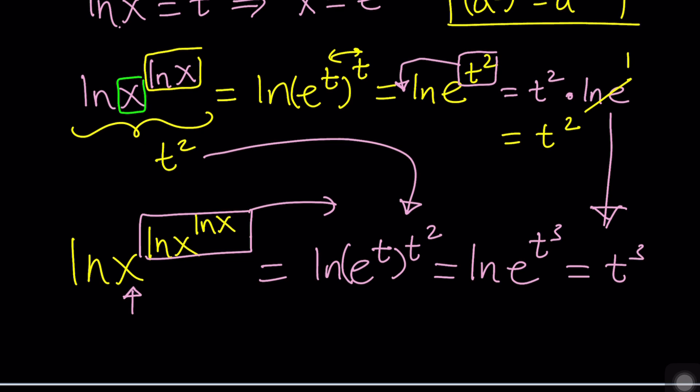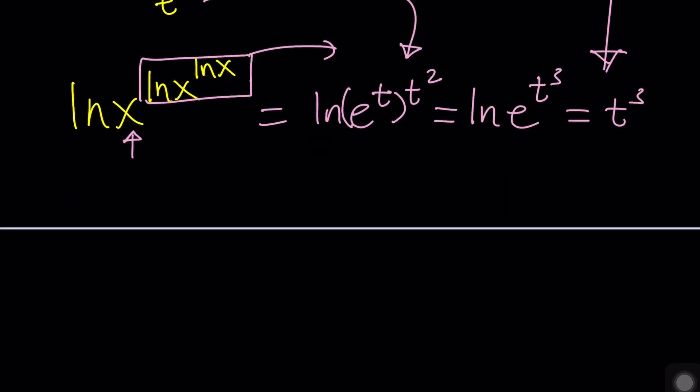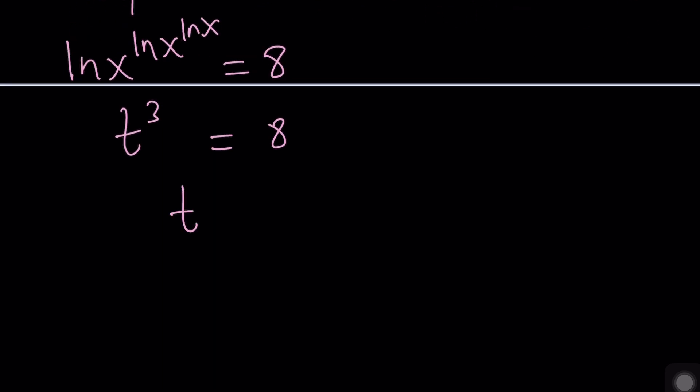So, we got a very simple answer. Nice. What was the original problem? Did you forget? Hopefully not. We had ln(x) to the power ln(x) to the power ln(x) equals 8. Now, we know that ln(x) to the ln(x) to the ln(x) is equal to t cubed, which is 8. From here, if you're looking for real values, t equals 2.